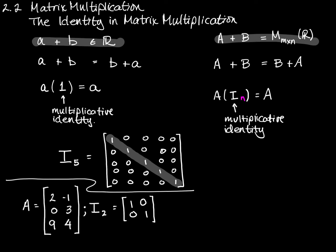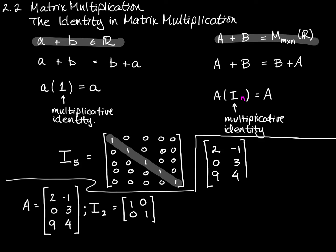Here is a matrix A, and notice that it is a three-by-two matrix. And here's the two-by-two identity matrix I sub two. This three-by-two and this two-by-two can be multiplied together. When we do that — I'm going to squeeze myself into this corner here — we get the matrix with entries 2, negative 1, 0, 3, 9, 4 times the identity matrix with entries 1, 0, 0, 1. This is a three-by-two times a two-by-two, so we're going to get a three-by-two matrix as a result.